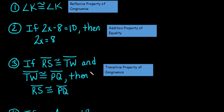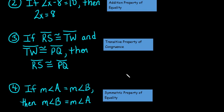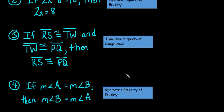If segment RS is congruent to segment TW and segment TW is congruent to segment PQ, then segment RS is congruent to segment PQ. And that's the transitive property of congruence. And this one, if the measure of angle A equals the measure of angle B, then the measure of angle B equals the measure of angle A. And that's the symmetric property of equality.